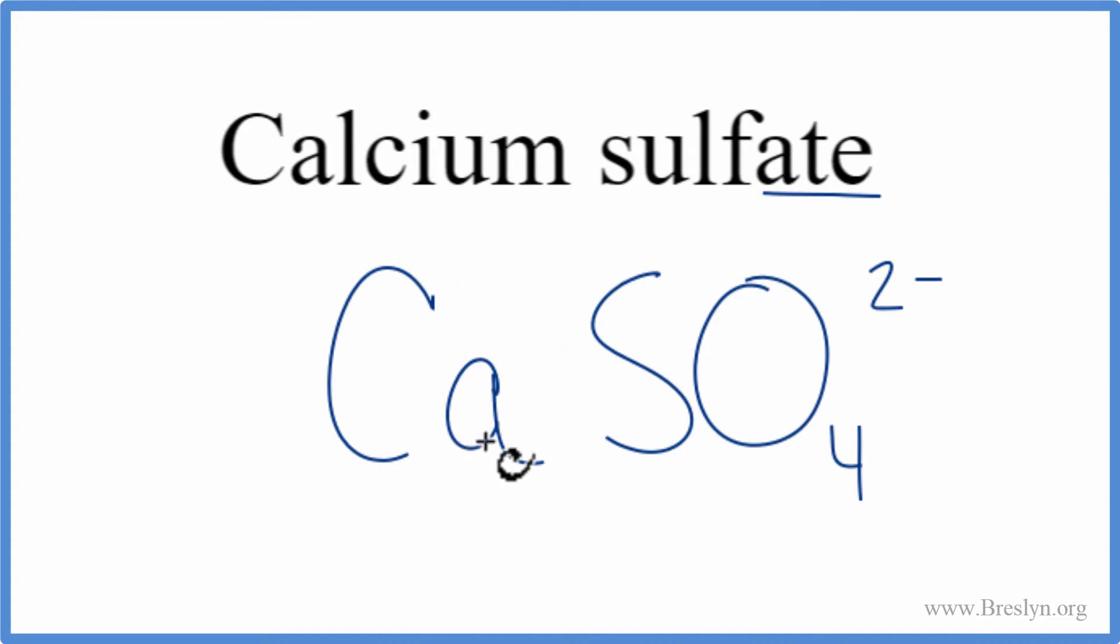Calcium on the periodic table is in group 2. That means it has a 2-plus ionic charge. The sulfate had a 2-.